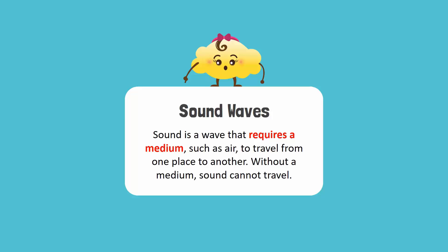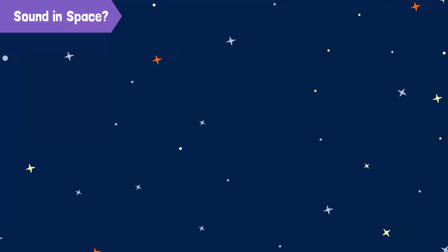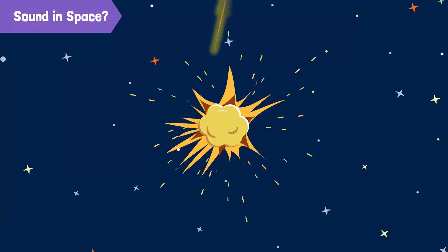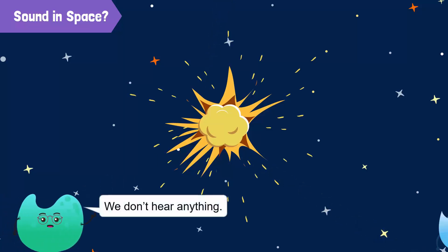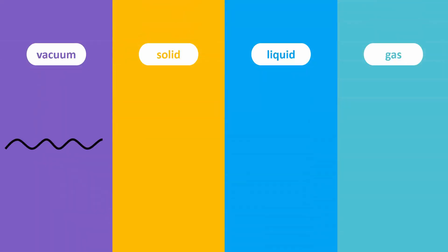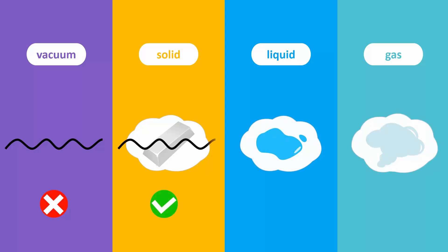Without a medium, sound cannot travel. Suppose somewhere out in space a huge explosion occurs, but we don't hear anything. Why? Because sound waves do not travel in a vacuum. They need a medium like solid, liquid, or gas to transfer energy.